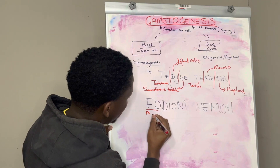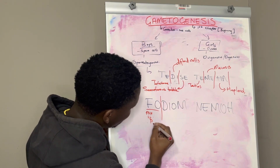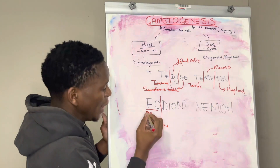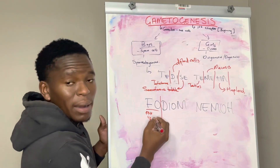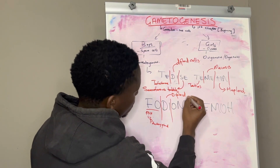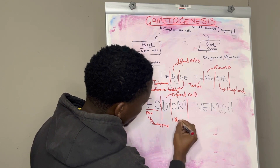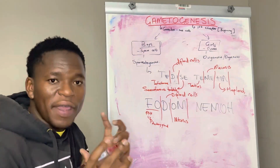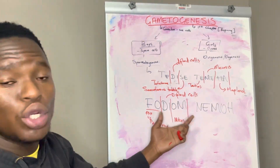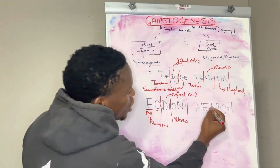Under the influence of FSH — secreted by the pituitary gland — the diploid cells will undergo cell division. For ovigenesis, unlike spermatogenesis where we had one cell division, here we are going to have two: mitosis first, and then meiosis will come after. The mitosis will produce numerous follicles.